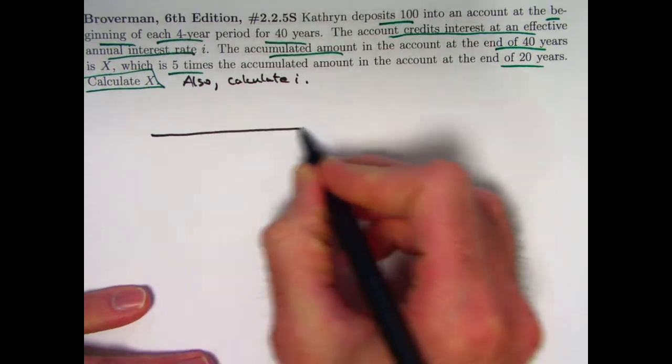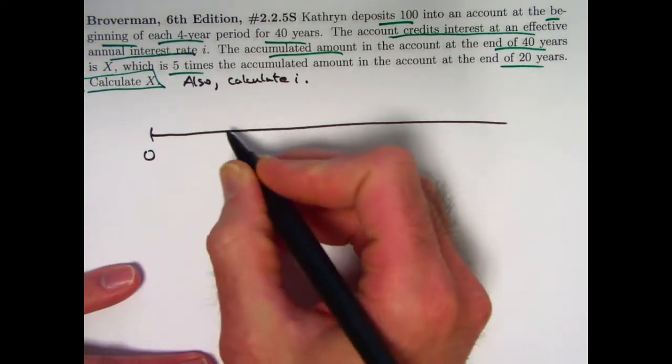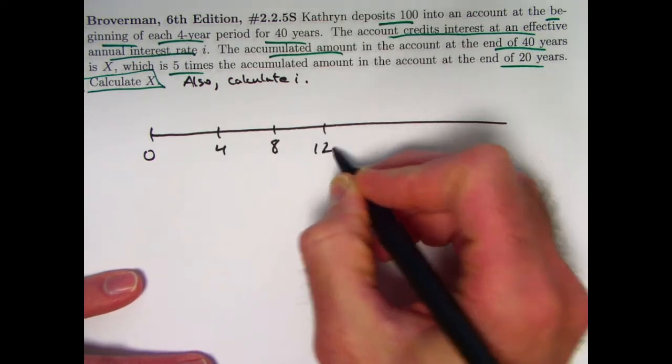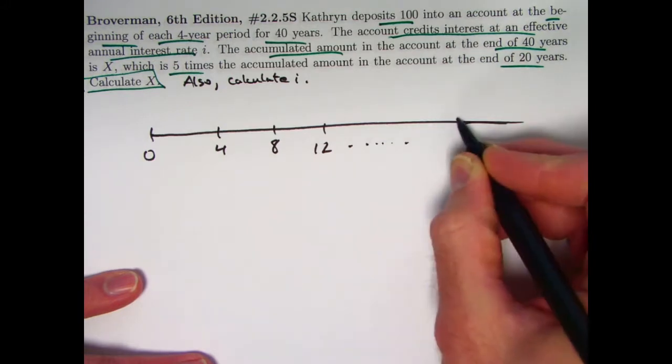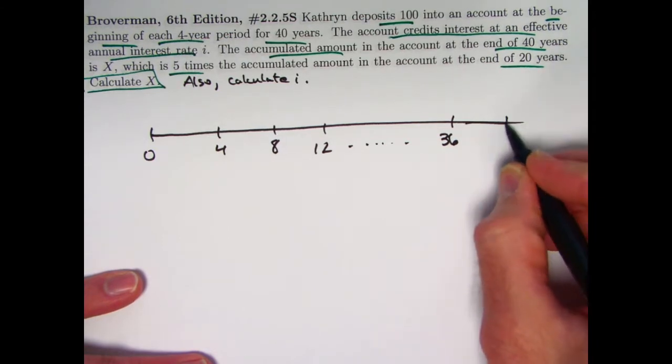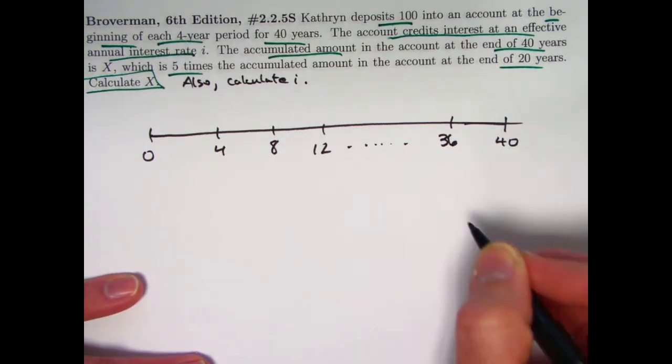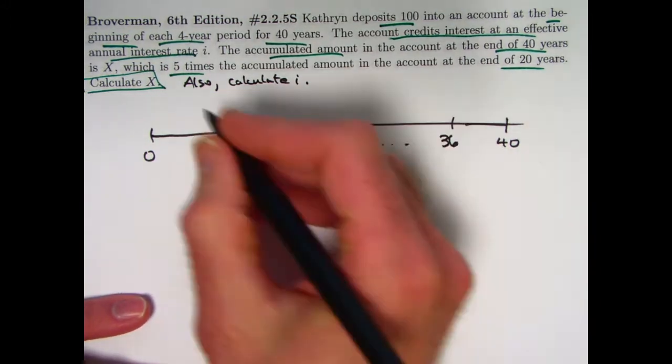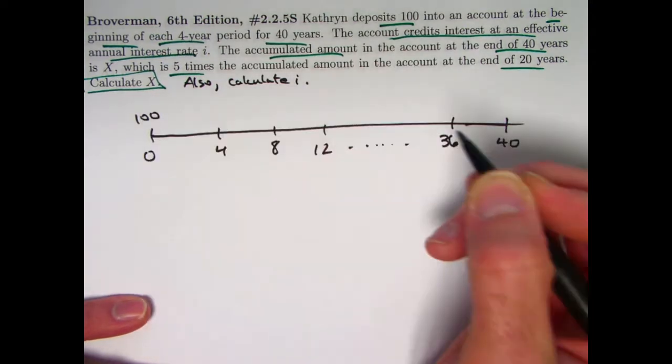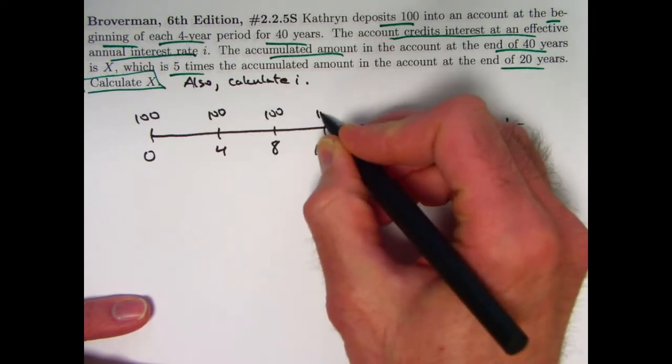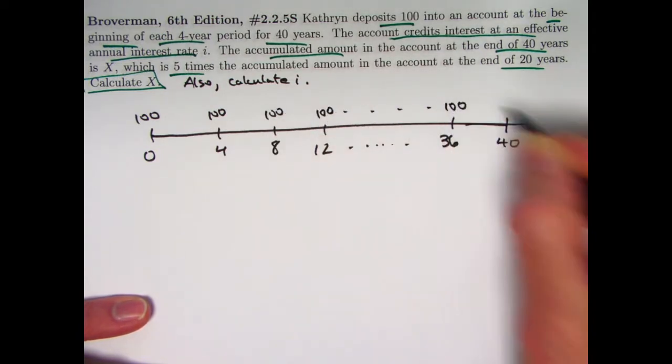Here's our timeline. Time zero. Let's only mark four-year intervals. Here's 4, here's 8, here's 12, etc. 36 years after year zero, after time zero, will be her last payment. Then the accumulated or future value is going to be found at time 40, that is going to be x. So there's a 100 deposit here at time zero, a 100 deposit here at time four, etc. The last deposit, which will be the 10th deposit, is at time 36.